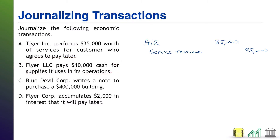Transaction B: Flyer LLC pays $10,000 cash for supplies it uses in its operations. We are spending cash, so that's an asset down. However, we are getting supplies in exchange — asset up. So we just have an exchange of assets, one going up and one going down. Asset going up is the debit: supplies, $10,000. Asset going down is the credit: cash, $10,000. That is our journal entry representing cash out, supplies in.